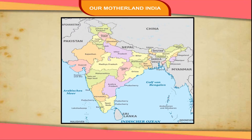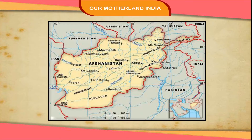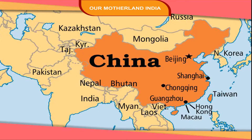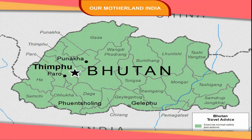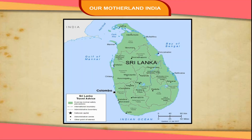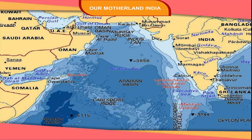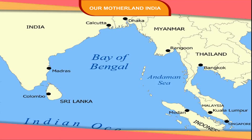There are several countries around India. They are Pakistan, Afghanistan, China, Nepal, Myanmar, Bhutan, Bangladesh and Sri Lanka. Besides these countries, the Arabian Sea, the Indian Ocean and the Bay of Bengal also touch its border.